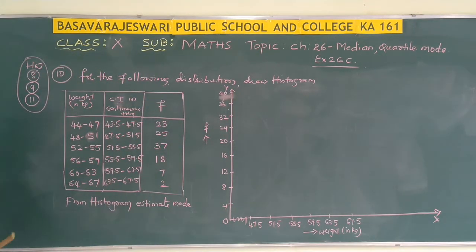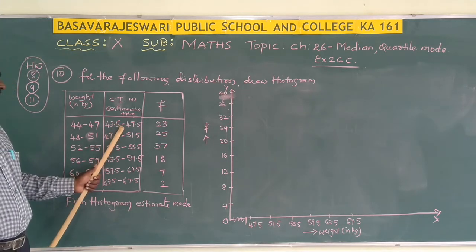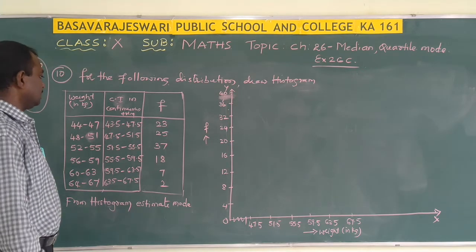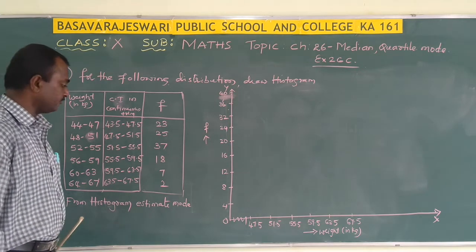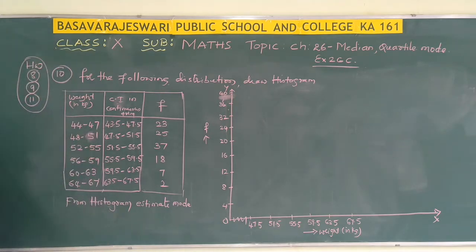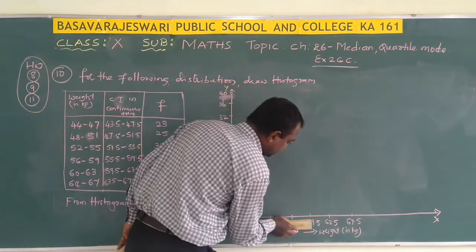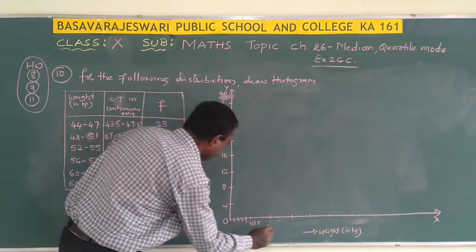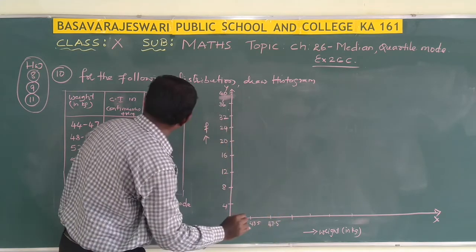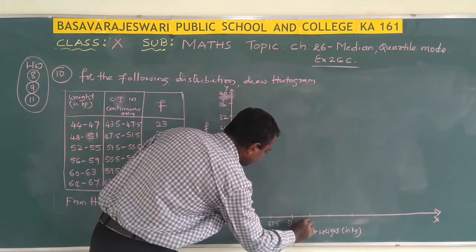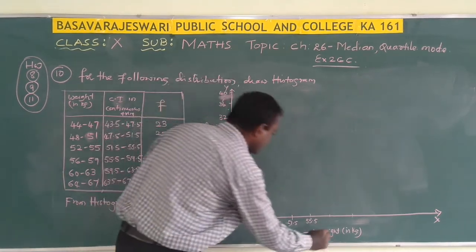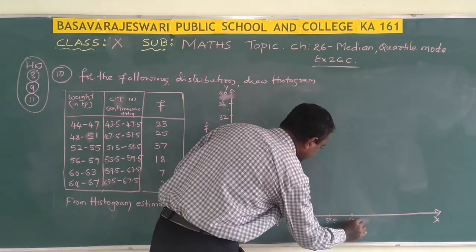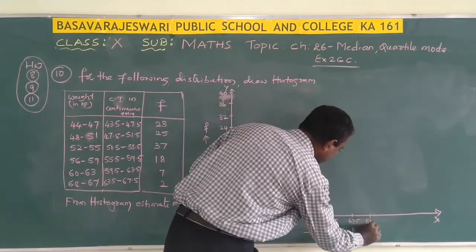Now draw the histogram. We have to take 43.5, next 47.5, next 51.5, next 55.5, next 59.5, next 63.5, and last 67.5 along the x-axis.